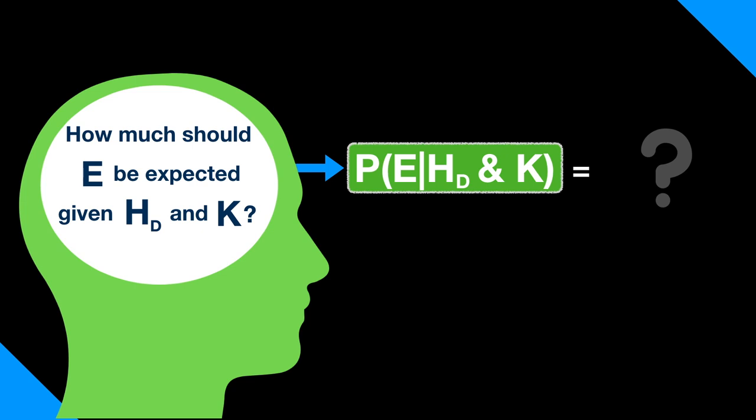Well, the existence of embodied, rational, and moral agents like ourselves is a great good, and a life-permitting universe is a prerequisite for those kinds of beings. So, the designer of the universe would have a good reason to make it life-permitting.